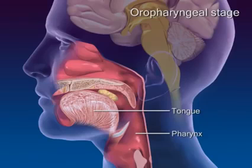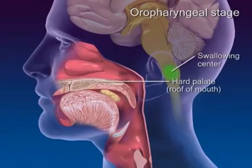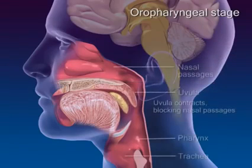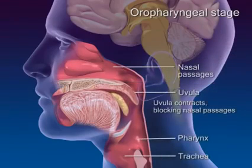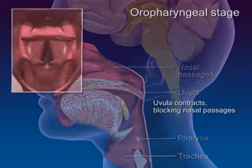In response to activation of pharyngeal pressure receptors, the swallowing center in the medulla initiates reflexes that prevent food entry into respiratory passageways. The uvula contracts, which blocks the nasal passages from the pharynx.